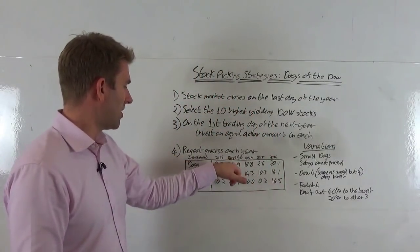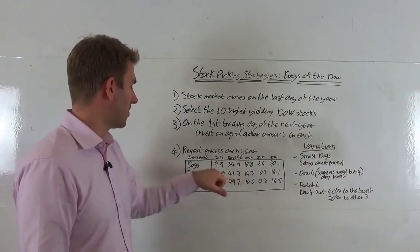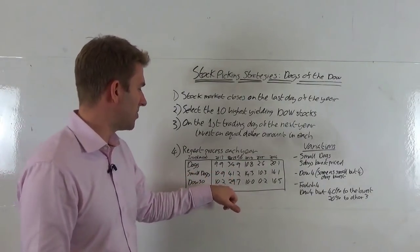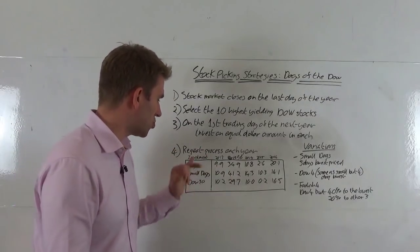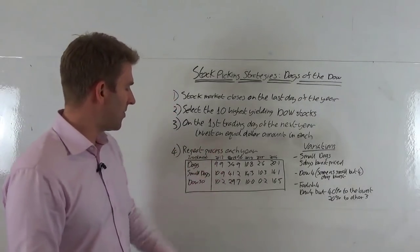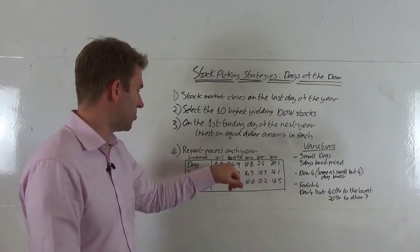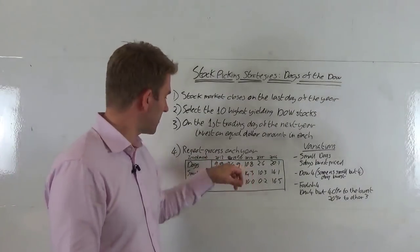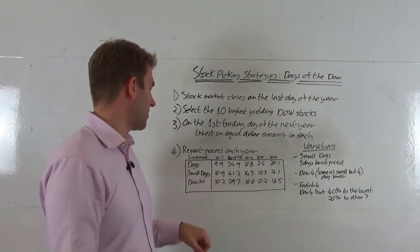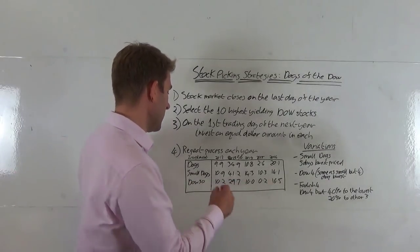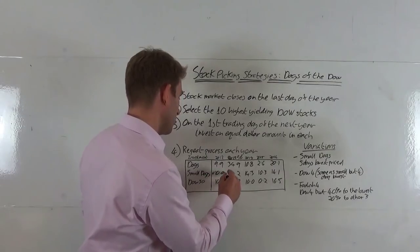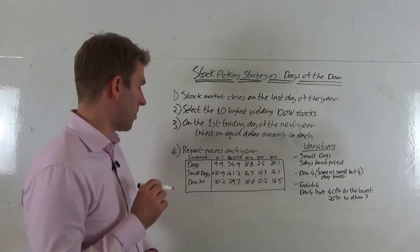So dogs 9.9%, small dogs 10.9%, Dow 30 10.2%, all very similar. The small dogs outperformed just about. Next year we had a booming year, 2013. Dogs 34.9%, small dogs 41.2%, and Dow 30 29.7%. So that's another win actually for the small dogs. Let's put a little tick on the one who's got the winner.